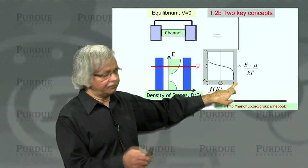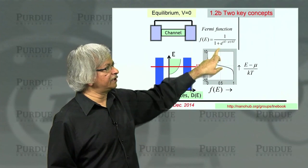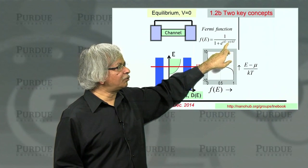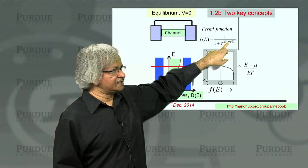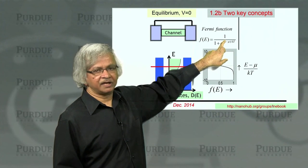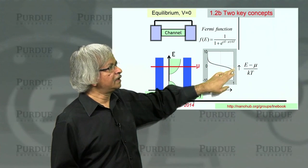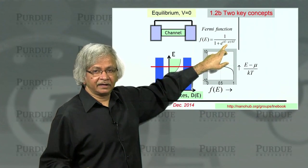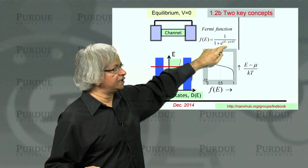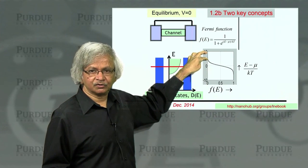And the mathematical form of this function looks something like this. It is 1 divided by 1 plus exponential E minus mu over KT. So when that quantity is negative, then it is exponential of a large negative number, which is 0. And so the function becomes 1. When that number is big, like exponential of a positive number, that's a very large number. And so 1 divided by a large number, that's what makes it a very small number. It goes to 0.